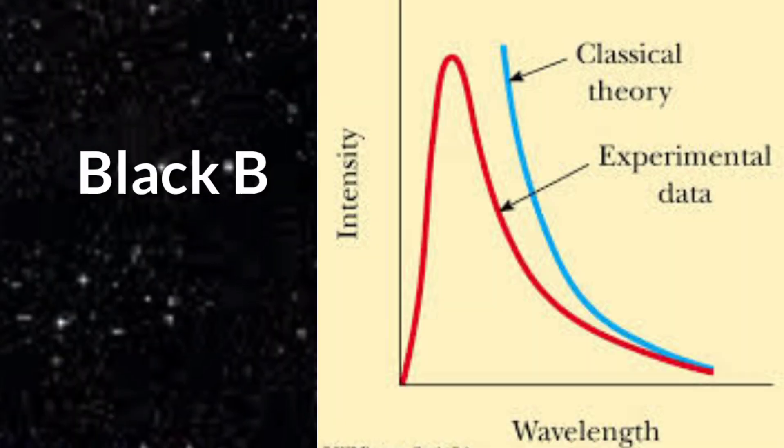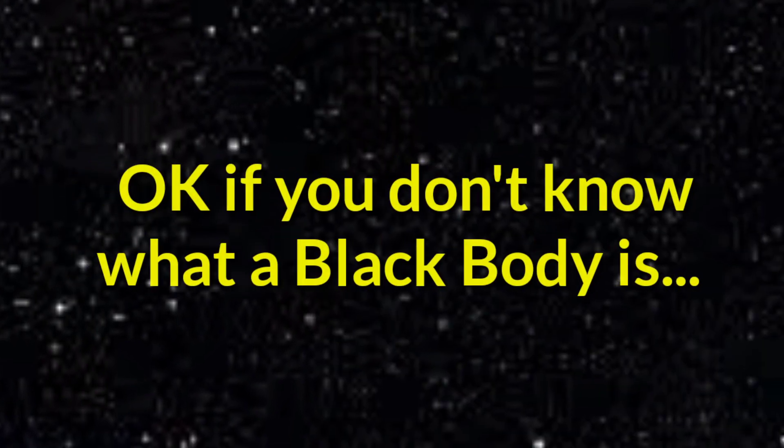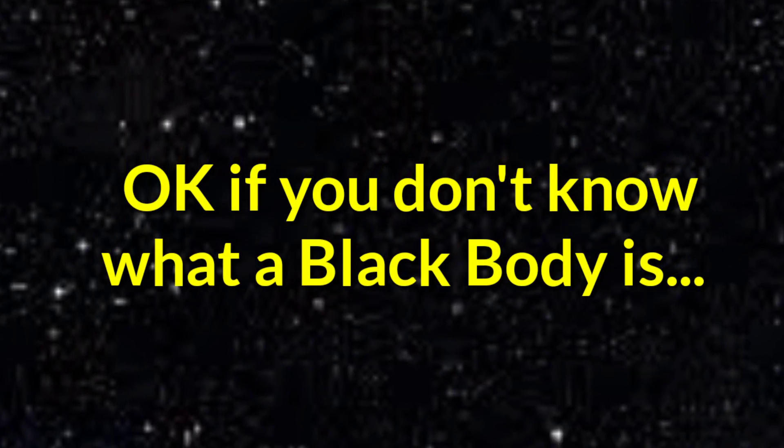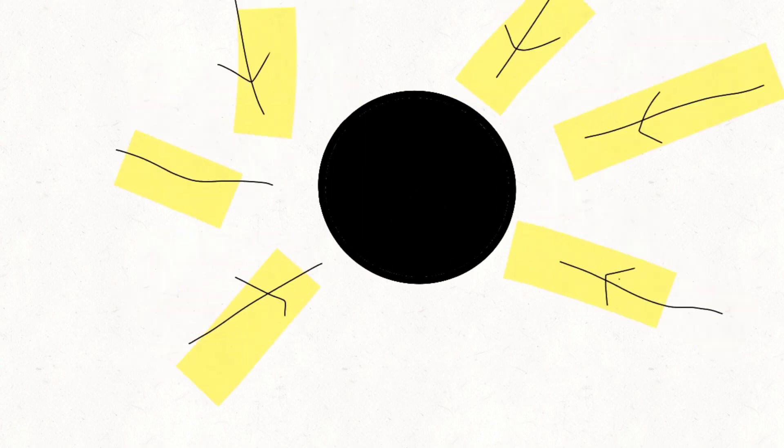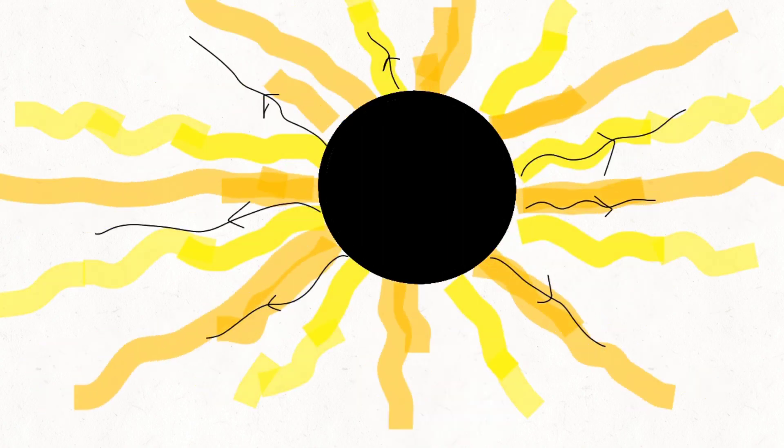If you don't know what a blackbody is, it's just a material object that absorbs all the radiation falling on it, hence appears black. When it's heated, it radiates electromagnetic energy as a result of thermal agitation of electrons on its surface.